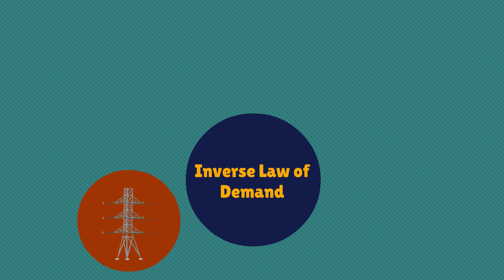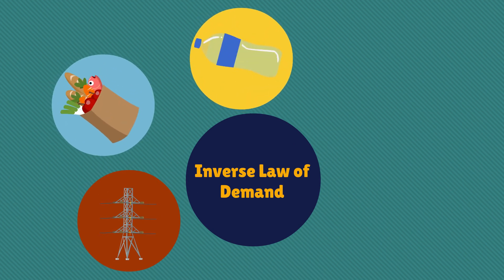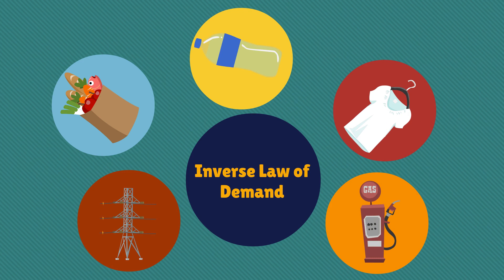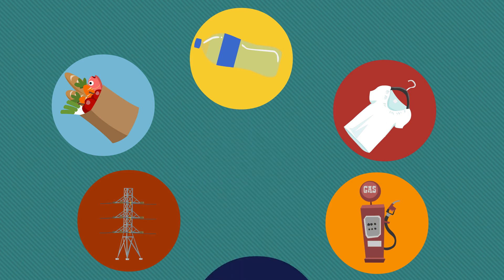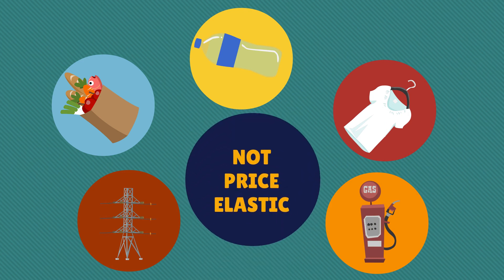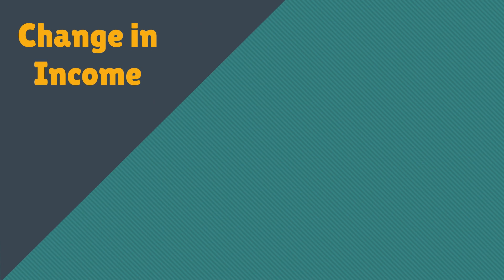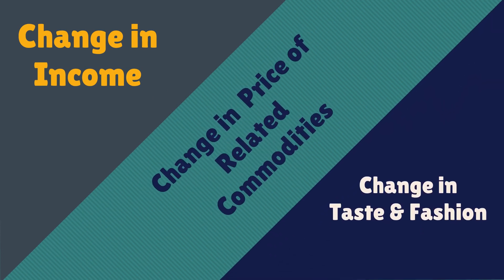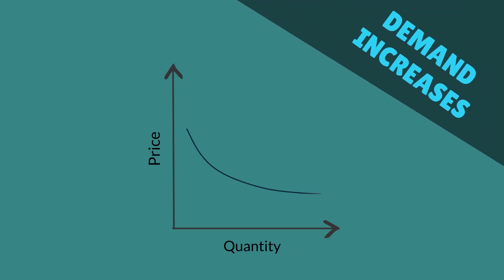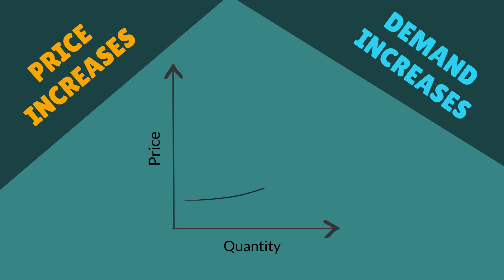Fourth, the demand for necessities — the law of demand does not apply much in the case of necessities of life. Irrespective of price changes, people have to consume the minimum quantity of necessary commodities. The law of demand will also fail if there is any significant change in other factors on which demand depends, such as a change in the income of the household, the price of related commodities, or in tastes and fashions — in these cases, the inverse demand and price relation may not hold good.